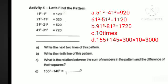What is the relation between the sum of numbers in the pattern and the difference of their squares? The relation is: 11 plus 1 is equal to 12, and 21 plus 11 is equal to 32. The relationship is 10 times the sum.